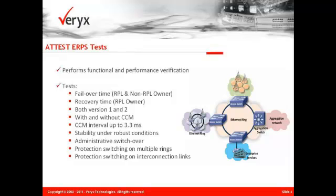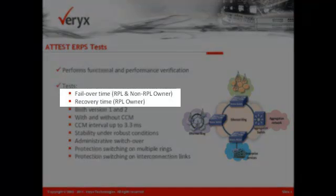The Berics ADDIST ERPS has been designed for functional and performance verification of Ethernet ring protection switching functionality in mobile backhaul networks. The ADDIST ERPS tests the recovery and failover time for ring protection link owner and non-ring protection link owner.